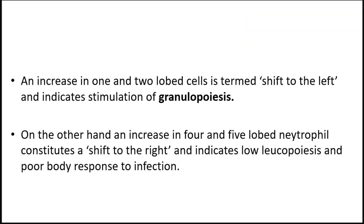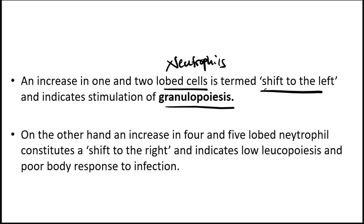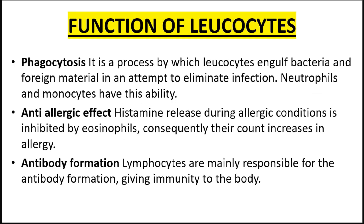An increase in one- and two-lobed neutrophil cells is termed a shift to the left, indicating an increase in immature neutrophils, eosinophils, and basophils. On the other hand, an increase in four- to five-lobed neutrophils constitutes a shift to the right, indicating low leukopoiesis and poor body response to infection.